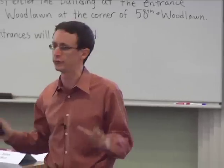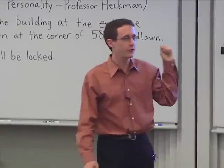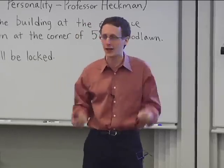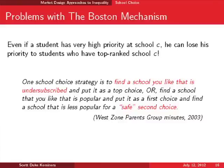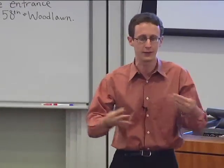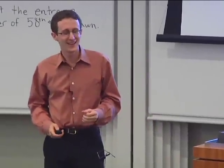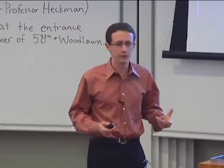This mechanism was extremely widespread—actually the most used school choice mechanism in the world. The West Zone Parents Group in Boston got together and jointly collected the data needed to strategize optimally. Their school choice strategy: find a school you like that is undersubscribed and put it as top choice, or find a popular school and put it first with a less popular safe second choice. To optimize, you need information about what applications other people are filing and what previous application numbers were. They collected all of this and had meetings. People are figuring out how to strategize against this mechanism.